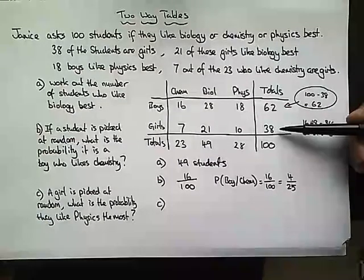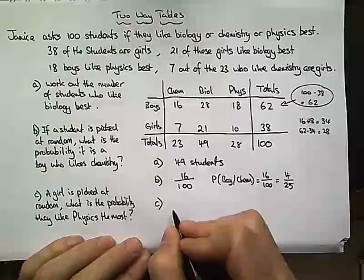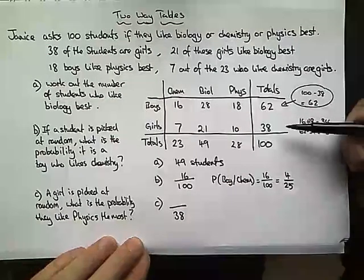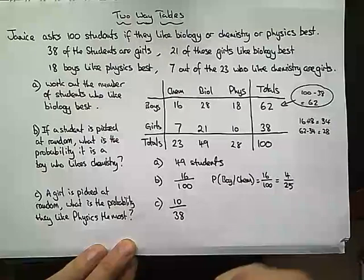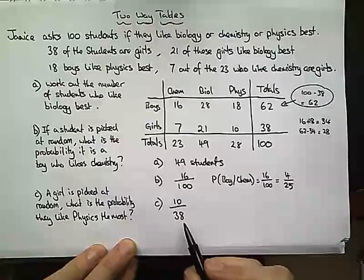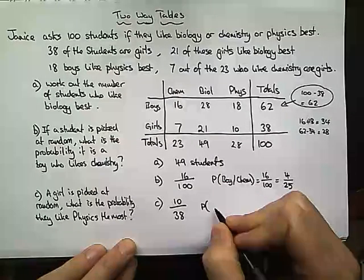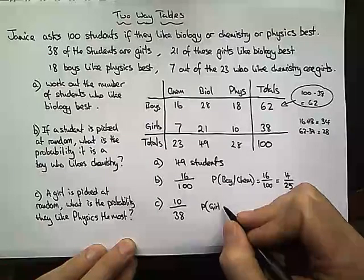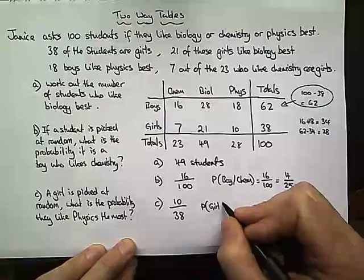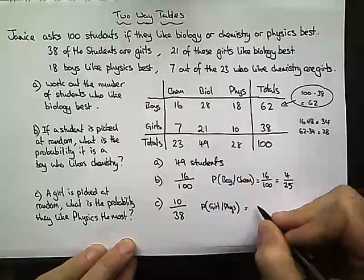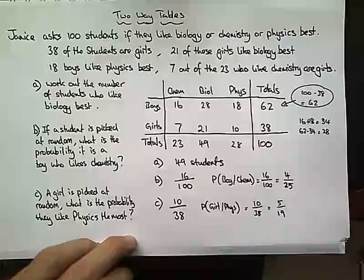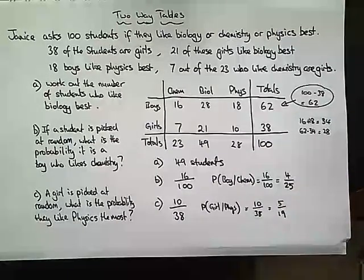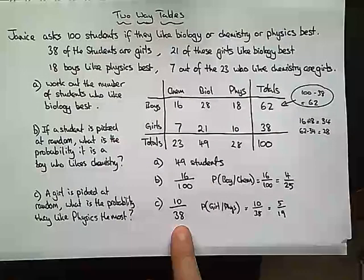For part c, a girl is picked at random, so the denominator is now 38 because we know it's a girl — we're not including the boys. What is the probability they like physics the most? There are 10 girls who like physics, so the numerator is 10. The probability equals 10 out of 38. Dividing both by 2 gives 5 out of 19.